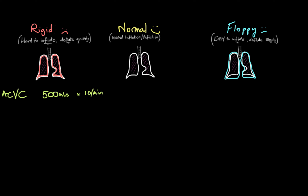We're ventilating our normal lungs, so this is where we start. Remember how volume control works: the ventilator says it's going to put 500 mils of tidal volume into this patient no matter what — its only concern is getting 500 mils into the chest. As a result of that 500 mils, the pressure in the patient's lungs is going to increase. That's just Boyle's law: P1V1 = P2V2. As you increase the volume in a system, the pressure proportionally increases — that's physics.